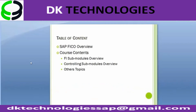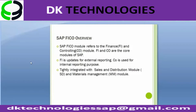The course content is divided into two parts: FI sub-modules overview and the controlling sub-modules overview. The SAP FICO module refers to Finance (FI) and Controlling (CO). FI and CO are the core modules of the SAP system. FI refers to financial accounting, whereas CO refers to controlling, generally termed managerial accounting. FI is used for external reporting and CO is used for internal reporting purposes.